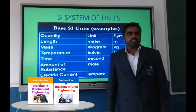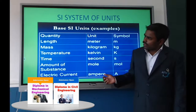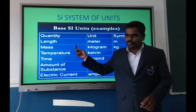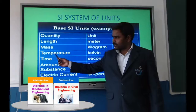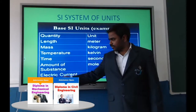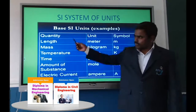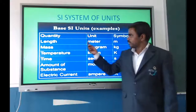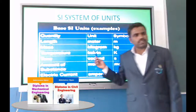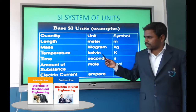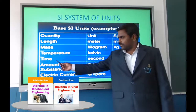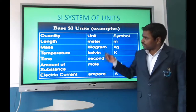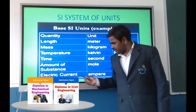The basic physical quantities are length, mass, temperature, time, amount of substance, and electric current. Their units are: length — meter; mass — kilogram; temperature — Kelvin; time — second; amount of substance — mole; and electric current — ampere.